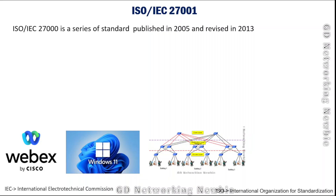The ISO 27000 series was published in 2005 and revised in 2013, and it gets revised approximately every five years. These are a set of guidelines, standards, and best practices given by ISO to organizations to help them secure their IT infrastructure and protect against cyber attacks.